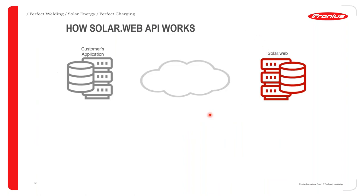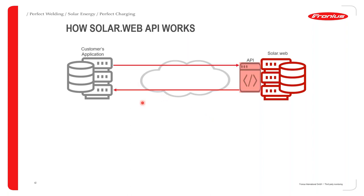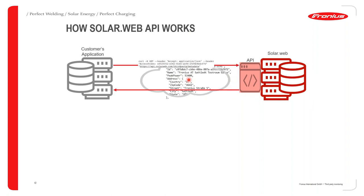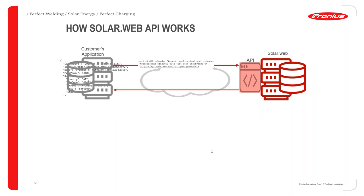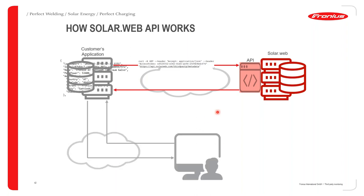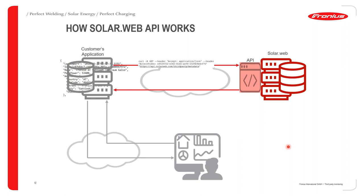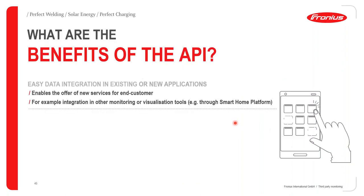How does the SolarWeb API work? In a nutshell, the API is basically a key or code that is developed and sent to SolarWeb. SolarWeb forwards the aggregated results for that query, which is then transmitted to the customer application. The customer application interprets this data into figures that are easily readable by the customer requesting the data.